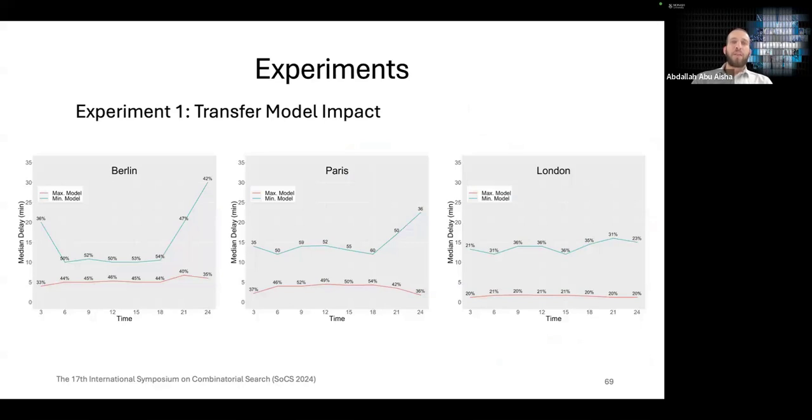Now we have three experiments. The first experiment is the transfer model impact. We compare our exact transfer cost with two uniform costs, the max model and min model. In the max model, we consider the maximum transfer time within stations and also between every pair of stations. In the min model, we consider the minimum transfer costs. We run the comparison on three networks, Berlin, Paris, and London. On all of the networks, we can see that using this max and min model leads to a significant percentage of queries being affected and delayed compared to the uniform transfer time. The maximum model is delayed by up to five minutes for these affected queries, while the min model can lead to even more severe delays up to 10 to 15 minutes across the three networks.